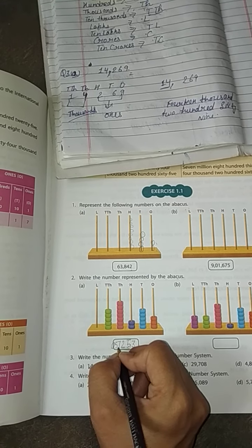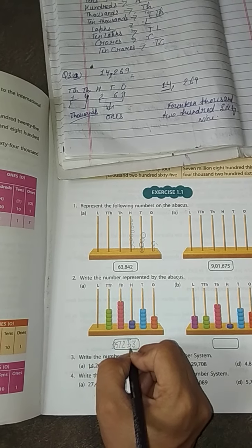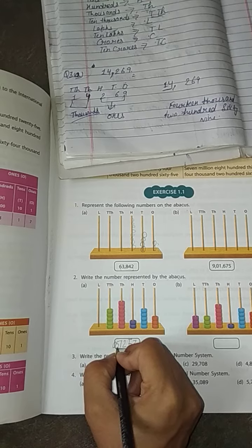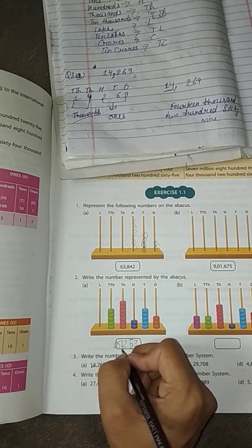Hundred ko hum ones ke period mein rakhte hain, seven and five ko thousand ke period mein rakhenge. Is liye jab ek period khatam ho jata hai to kya laga jata hai, koma.